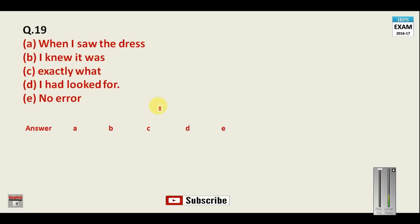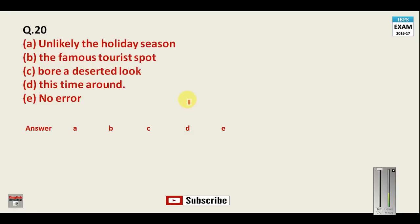Question number nineteen: 'When I saw the dress I knew it was exactly what I had looked for.' Before I actually saw the dress, I was searching — I was looking for a particular dress. Therefore, 'I had looked for' is wrong; you must say 'I was looking for.' Your answer for question number nineteen is D.